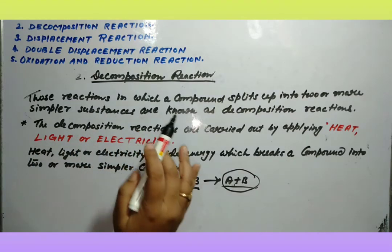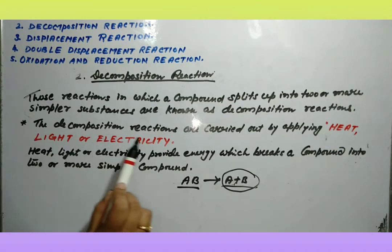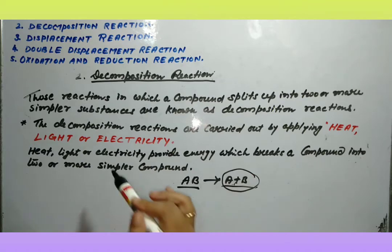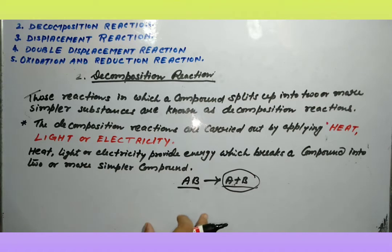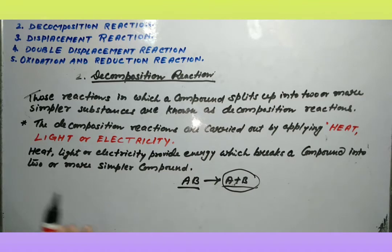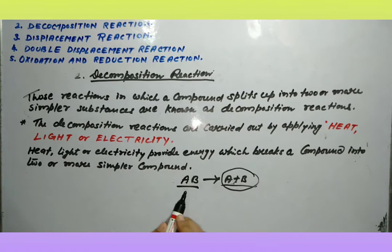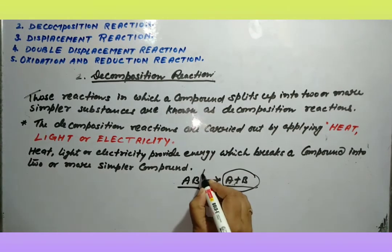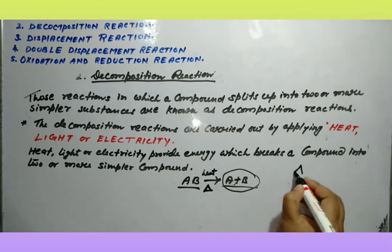Again I am repeating: those reactions in which a compound splits up into two or more simpler substances are known as decomposition reaction. The decomposition reaction is carried out by applying heat, light, or electricity. यह heat, light और electricity energy provide करते हैं which breaks a compound into two or more simpler compounds. Heat को triangle (△) symbol से भी लिख सकते हो।